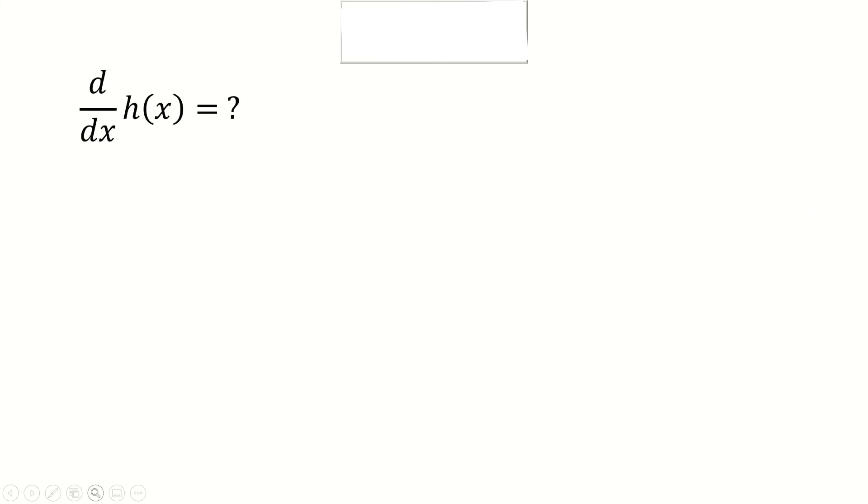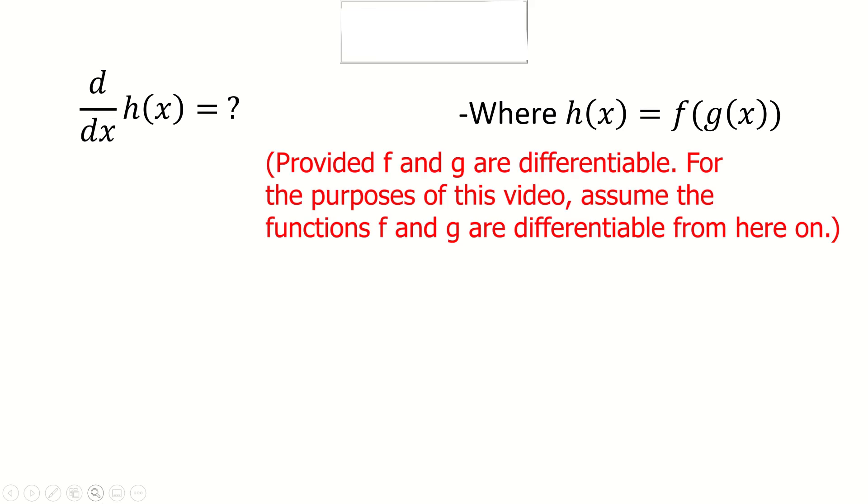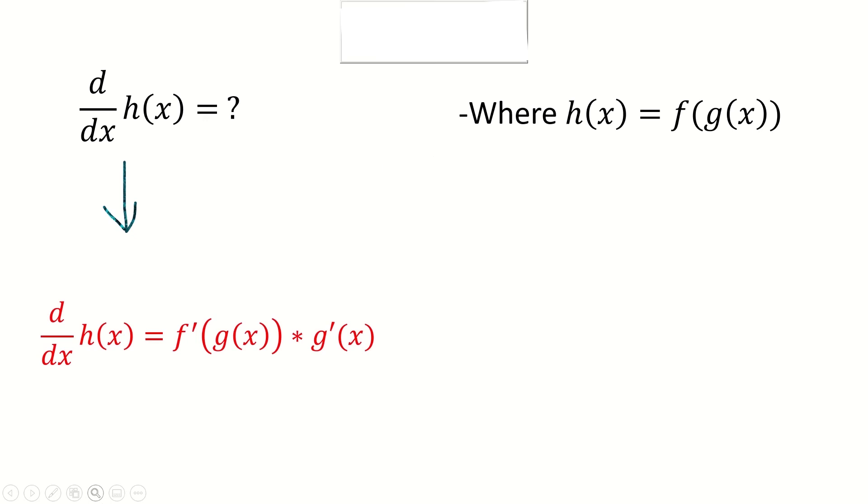Say we want to find the first derivative of a function h, which we define to be f composed with g. How would we do this? We could apply the chain rule and find its first derivative. But I'd like to rewrite this in a way that will help us later in the video.